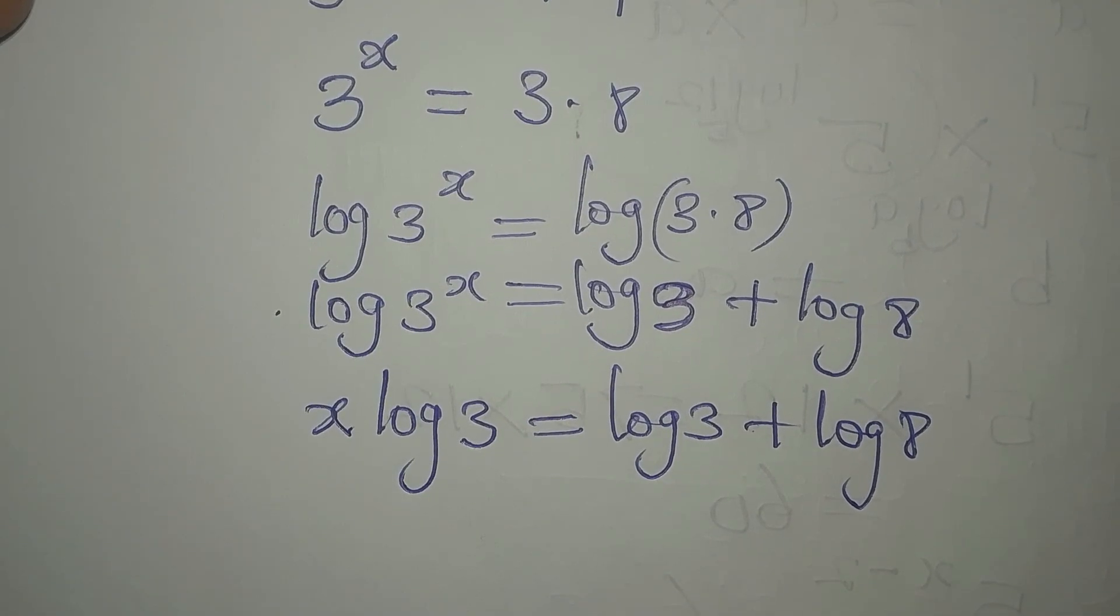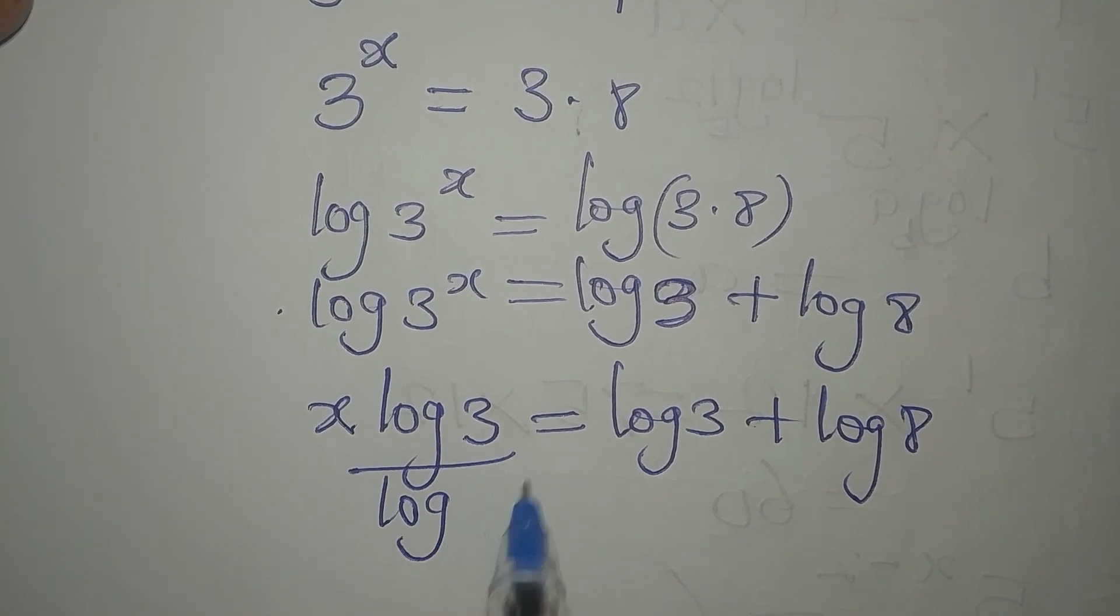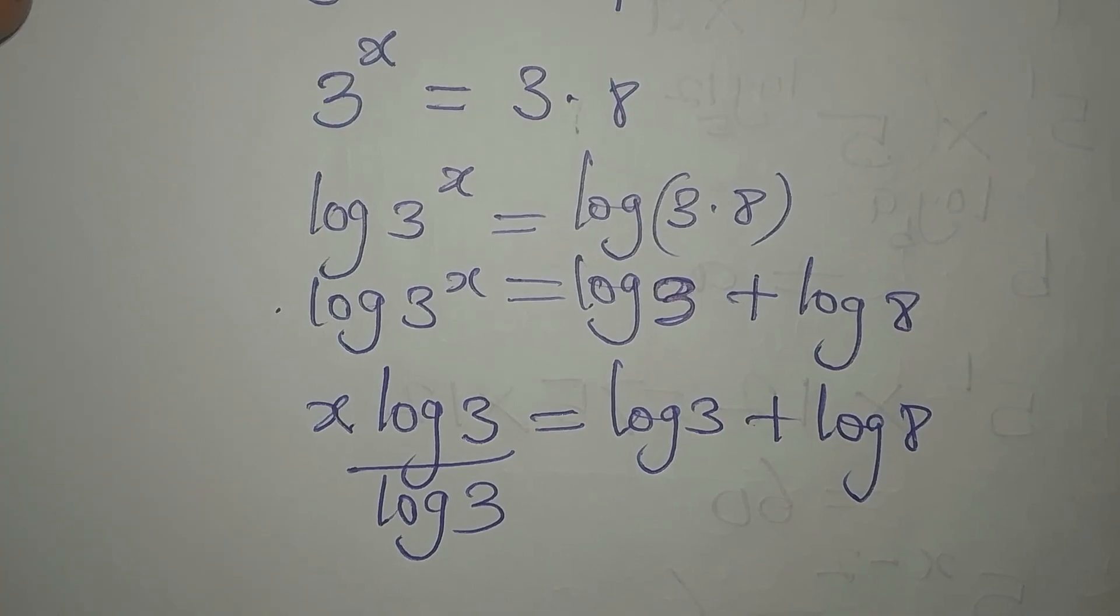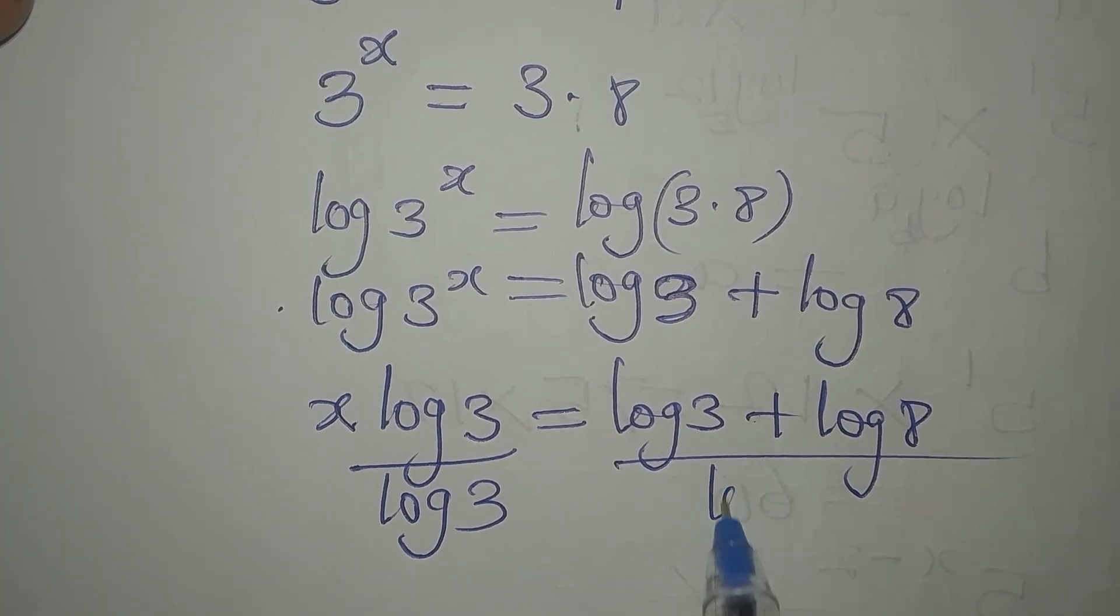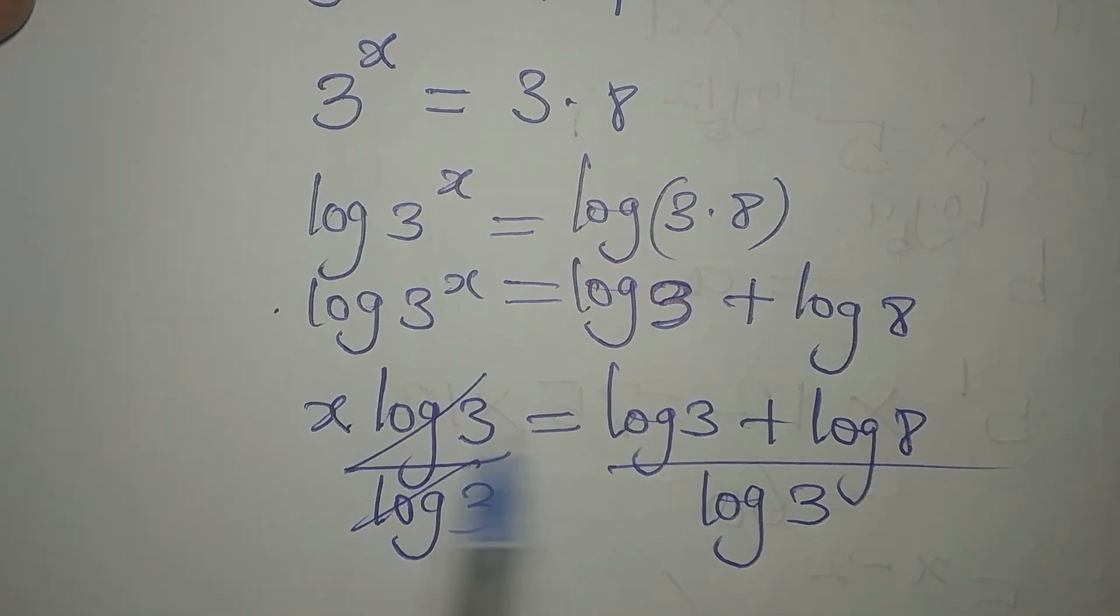Now how do we make x to be alone? We can only do that by dividing this by log 3. Since we have done this on the left, we have to do it on the right, so we divide this by log 3. This will just go.